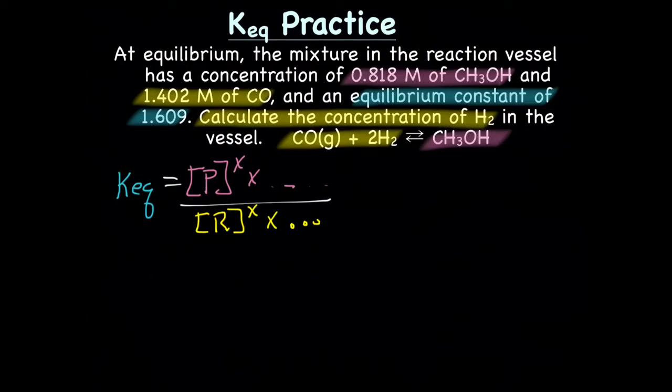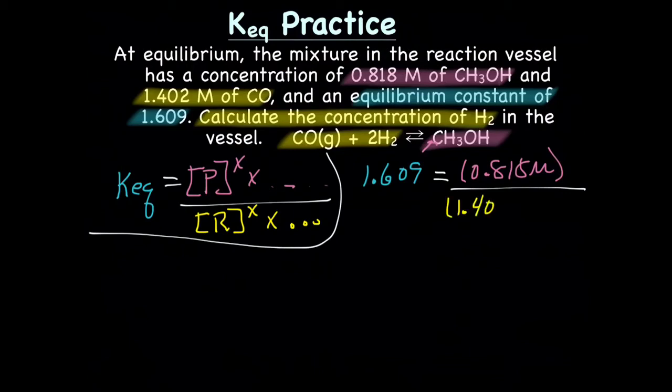Let's plug this in. If we start with our equilibrium constant, we have 1.609 equals the concentration of our products. In this case, there's only one product, which is 0.818 molar. No coefficient there, so no power, divided by the concentration of our reactants. We have 1.402 molar, no superscript because there's no coefficient. And then calculate the concentration of H2, so that's going to be our X. But this guy has a coefficient, so he's going to be X squared.